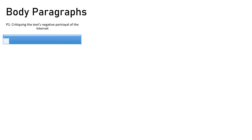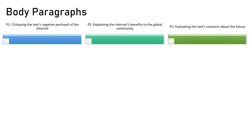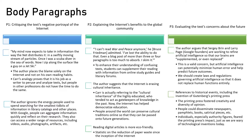Now let's write our body paragraphs. The first body paragraph will critique the text's negative portrayal of the internet. The second will explain the internet's benefits to the global community. And the third will evaluate the text's concerns about the future. We'll use a similar structure across all three paragraphs: first extract evidence — direct quotes or paraphrased material — from the text, and then respond to that evidence.